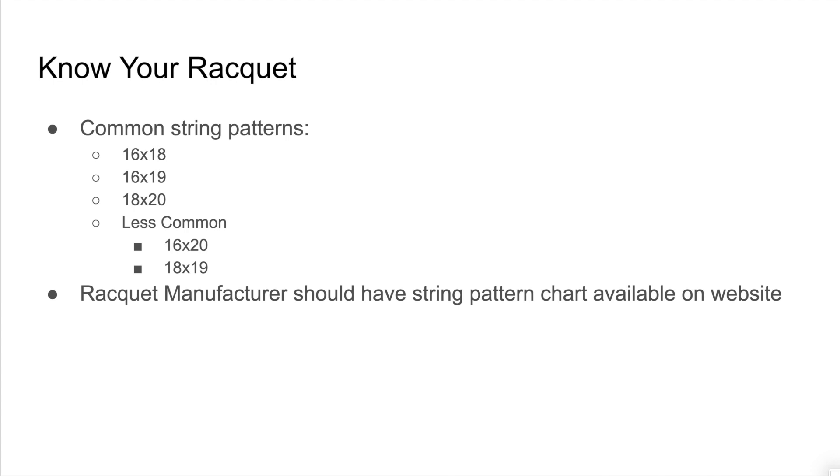Let's quickly talk about string patterns. Tennis rackets have a number of different stringing patterns, which reference the main strings, which are the long vertical ones, and the number of crosses. Common string patterns would be 16 mains by 18 crosses, 16 by 19, or 18 by 20. The number of mains is always listed first. Less common patterns would be 16 by 20 or 18 by 19. A more open pattern, which means fewer total strings or larger squares created by the string pattern, will give you better access to spin and perhaps a little bit more power. A dense pattern means that more strings are coming in contact with the ball at contact, which is going to give you more control and precision.